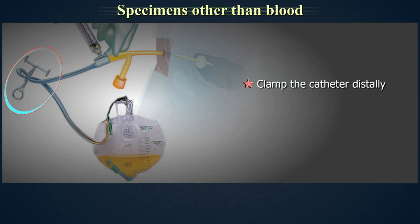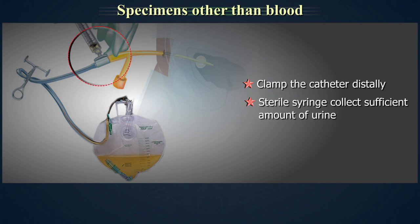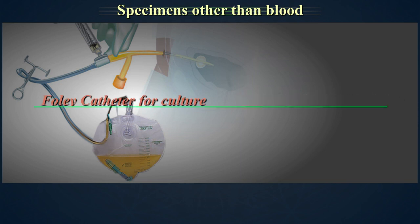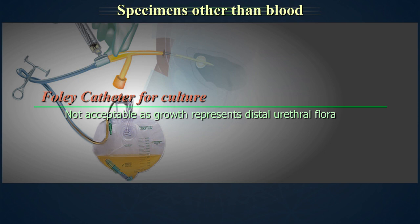Clamp the catheter distally to allow urine to collect. Using a sterile syringe and needle, collect a sufficient amount of urine sample. Transfer to a sterile container. Foley's catheter is not recommended for culture since growth represents distal urethral flora.